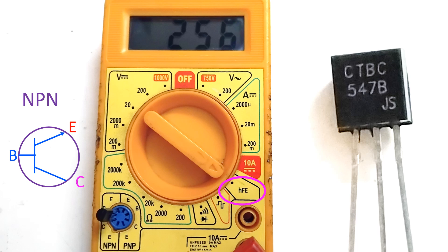Here you can see that the BC547B, which is an NPN transistor, has been inserted in the socket for NPN transistors, and the selector knob has been turned to HFE on the dial. The digital display shows an HFE value of 256, which is the current gain of this device as measured by the digital multimeter.